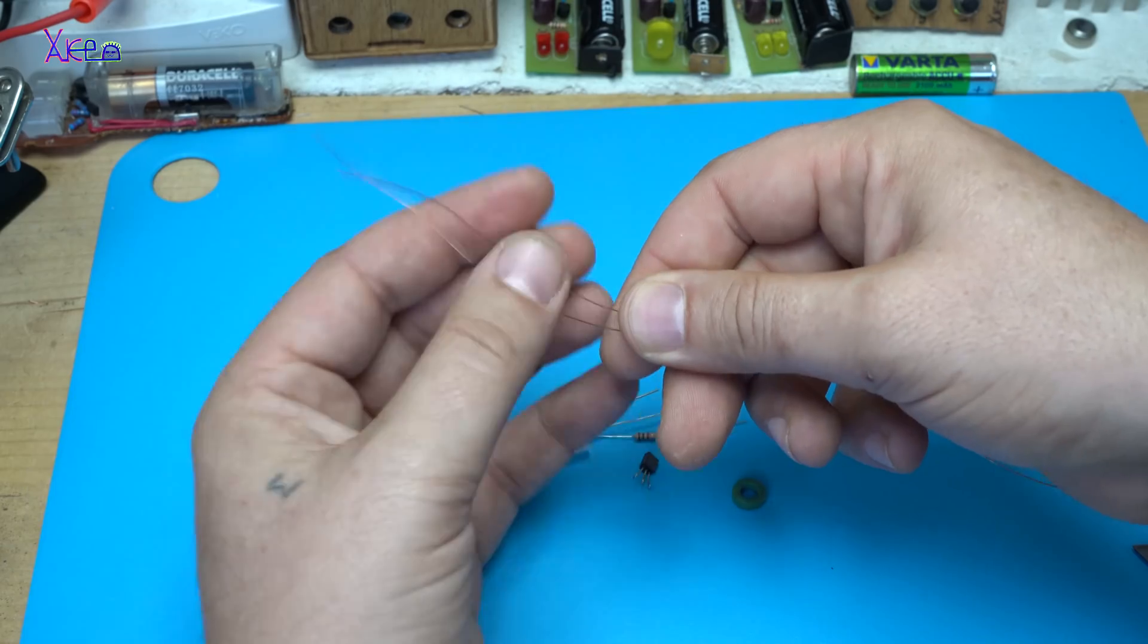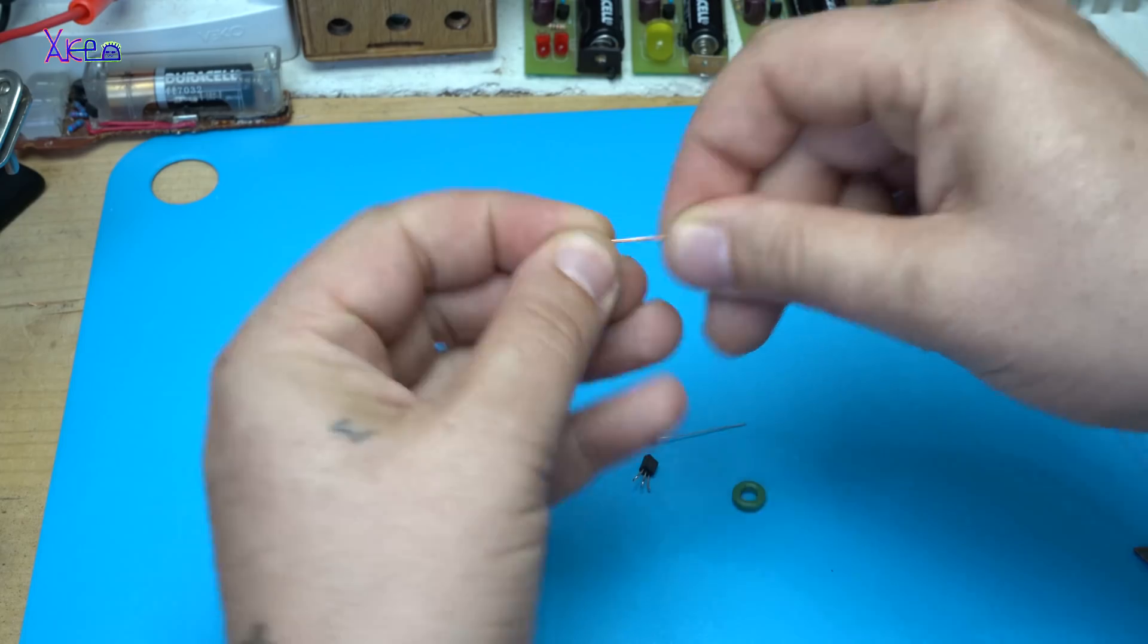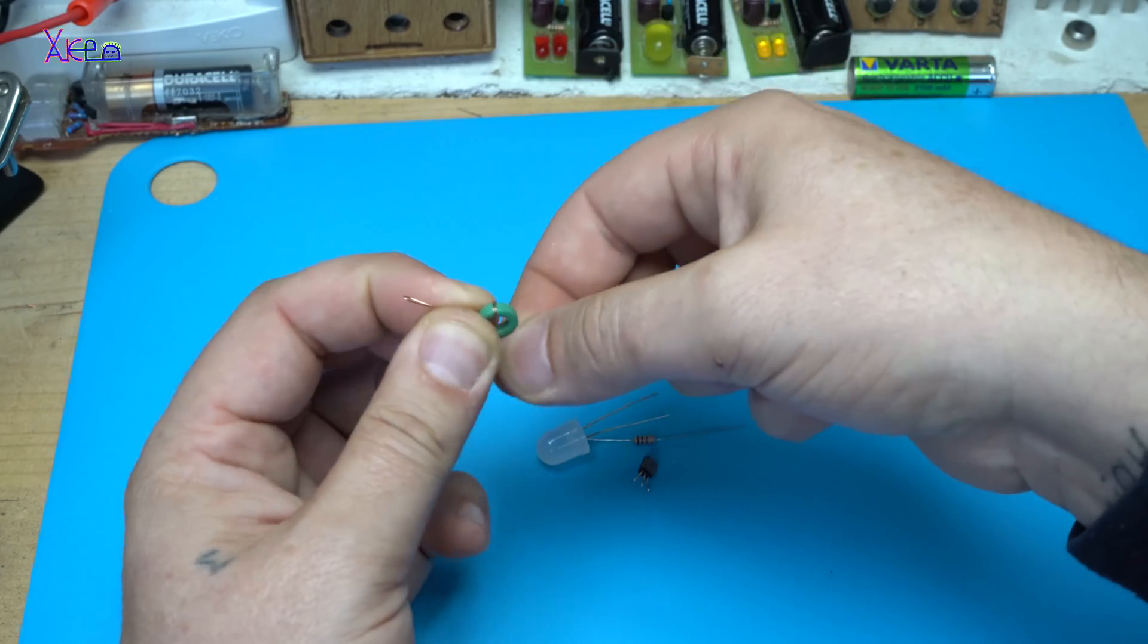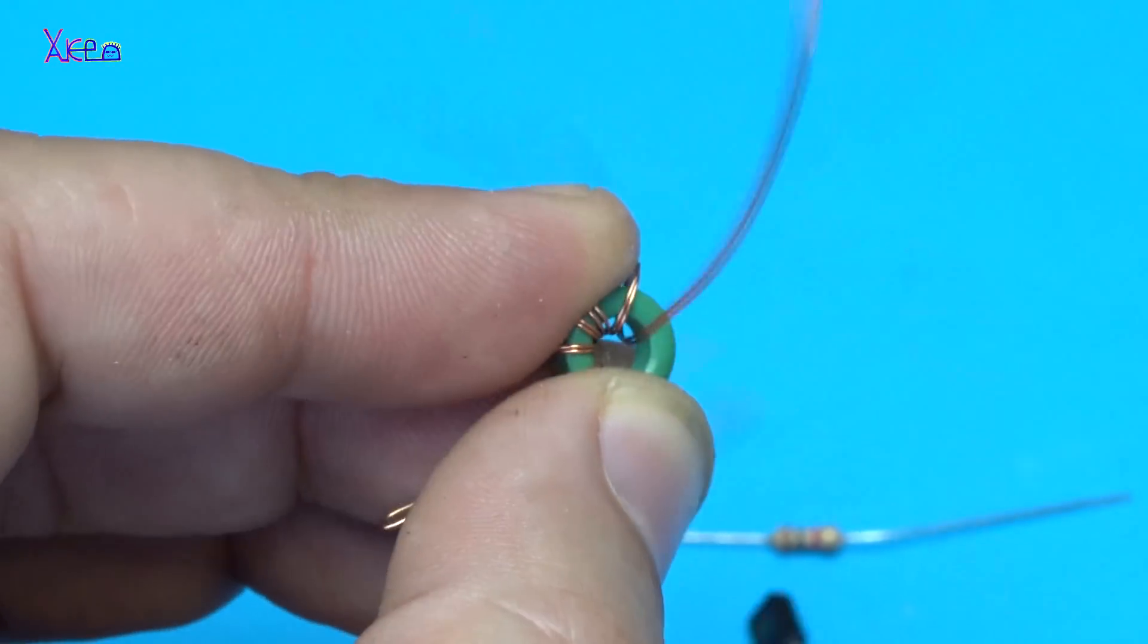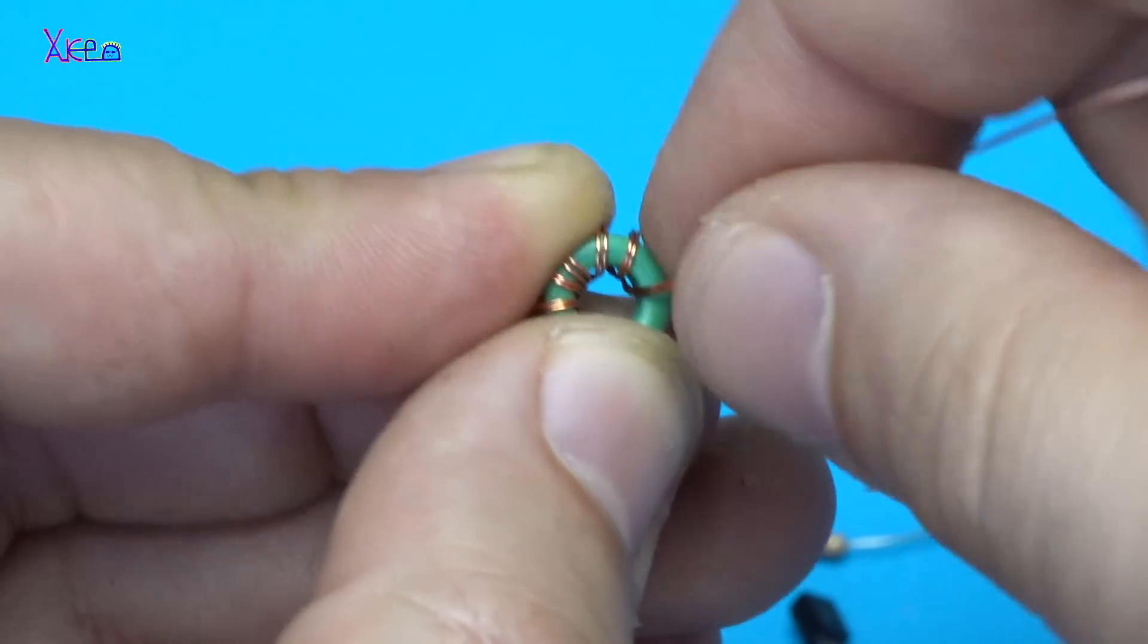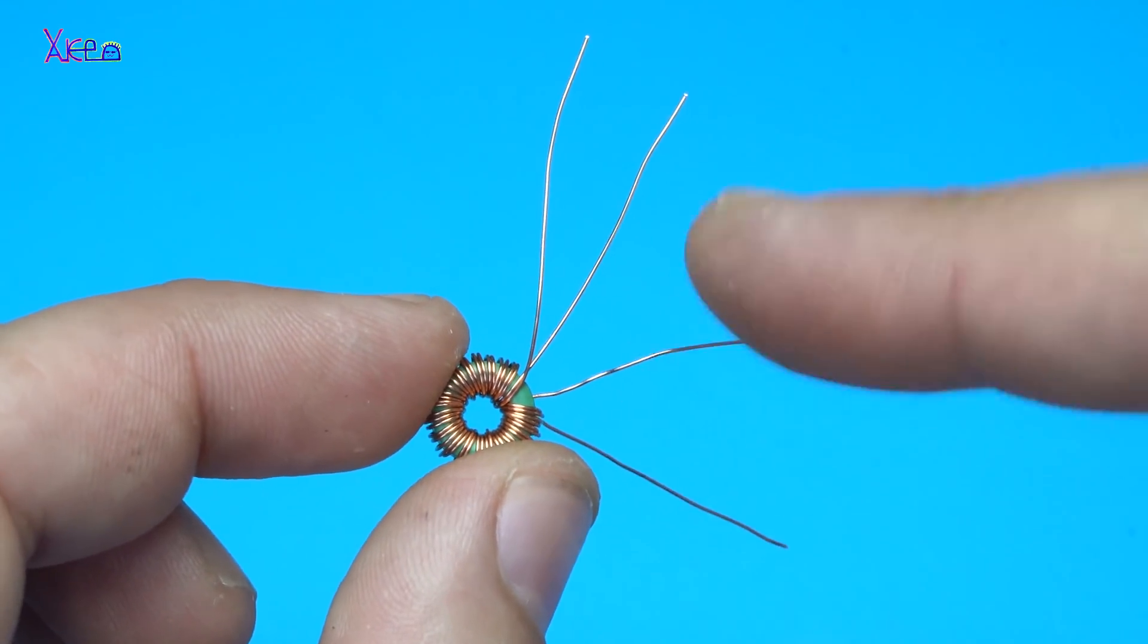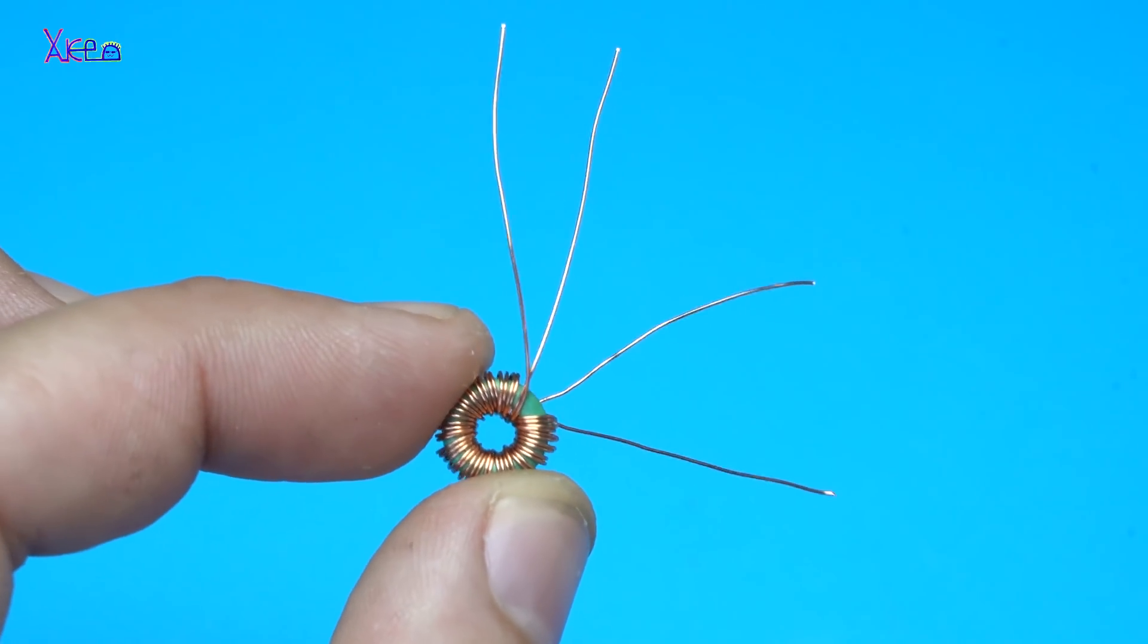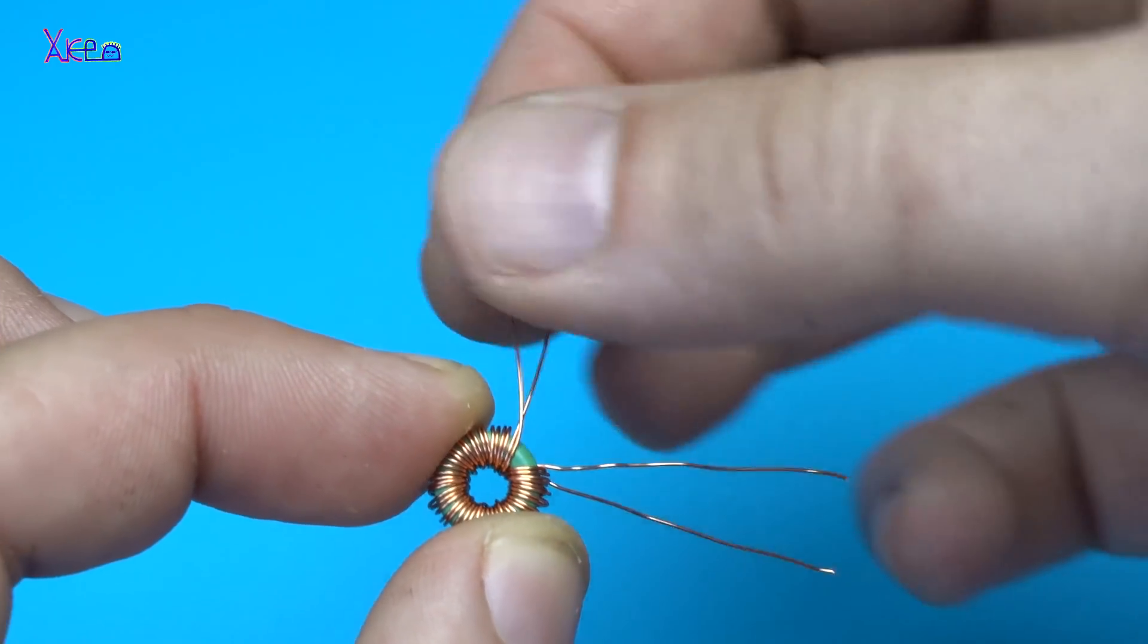You need 2 wires. And just make loops like mine. When you wind the copper wires on the ferrite core, you should get something like this with start and end of the wires.